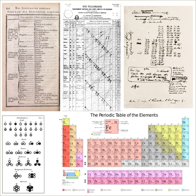The Russian chemist Dmitry Mendeleev was the first scientist to make a periodic table similar to the one used today. Mendeleev arranged the elements by atomic mass, corresponding to relative molar mass. It is sometimes said that he played 'chemical solitaire' on long train journeys, using cards with various facts about the known elements. On March 6, 1869, Mendeleev gave a formal presentation, 'The Dependence Between the Properties of the Atomic Weights of the Elements,' to the Russian Chemical Society.